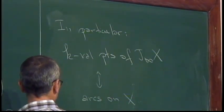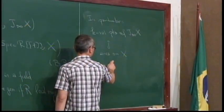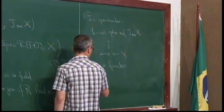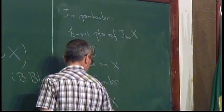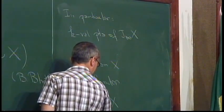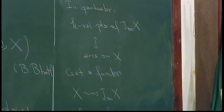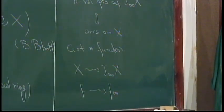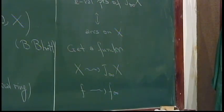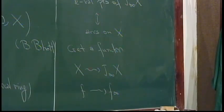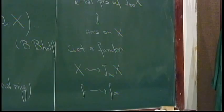Of course you can also make this into a functor, taking X to J_∞(X) and F to F_∞. The main issue is what kind of properties you can see at the level of the space of arcs or at the level of jet schemes — specifically, how can you see information about the singularities of X in terms of the space of arcs or jets.